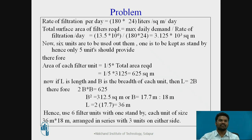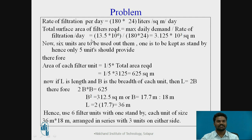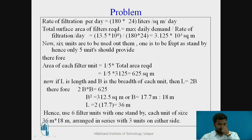Rate of filtration is given per hour, so multiplying by 24 converts it to per day. Total surface area of filter required = maximum daily demand ÷ rate of filtration = (13.5 × 10⁶) ÷ (180 × 24) = 3,125 m², i.e., 3.125 × 10³ m².